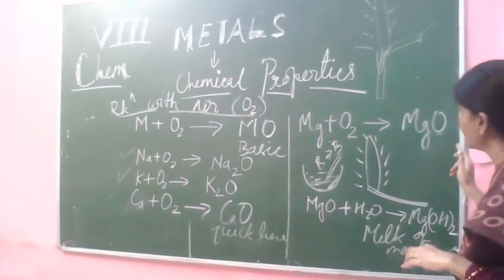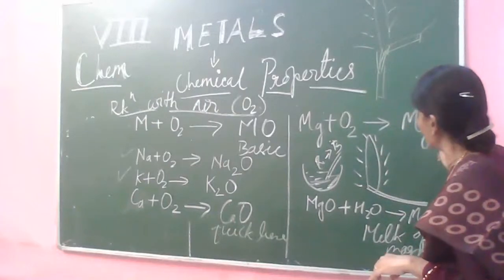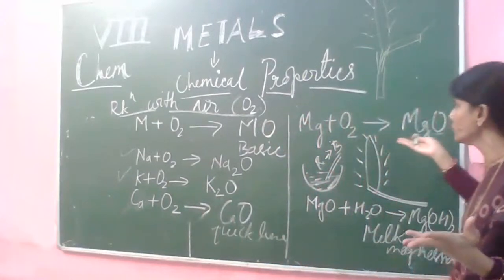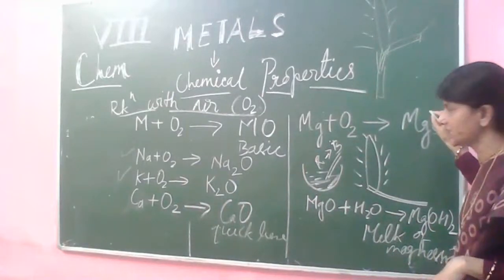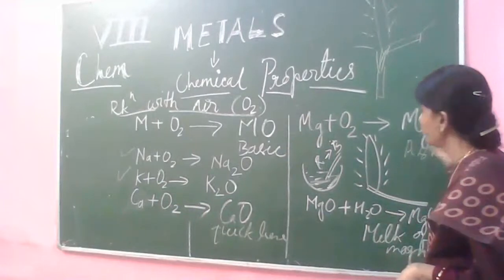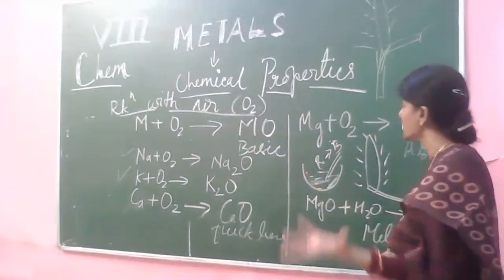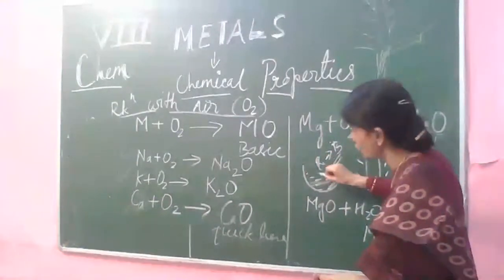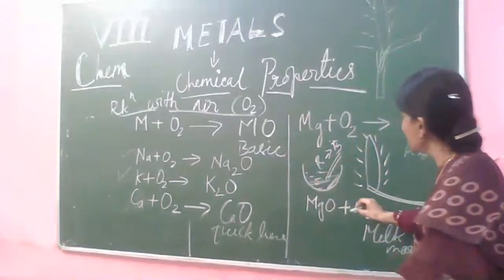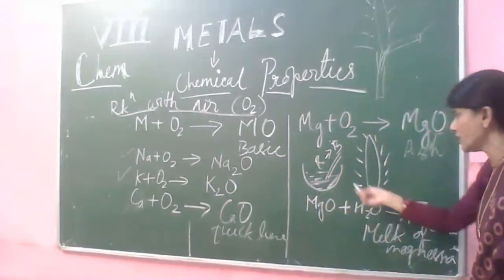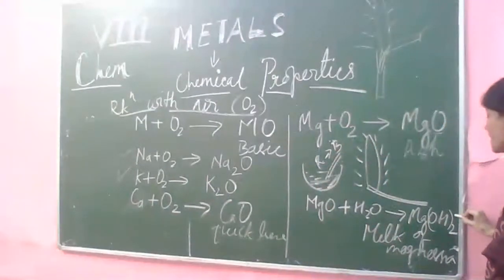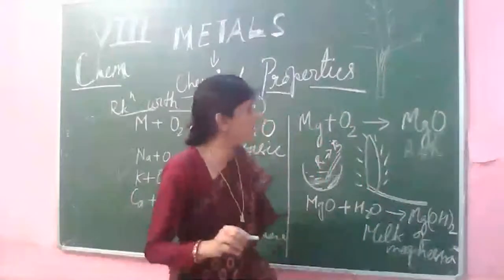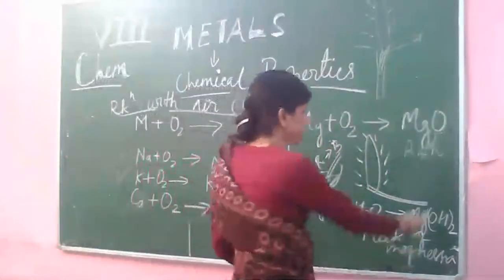Now we will try to prove that magnesium oxide is basic in nature. We take the ash of magnesium in a china dish — a bowl-like structure — and put some water in it and try to mix it. It will be half soluble in water; it will not completely dissolve. The chemical combination is: magnesium oxide plus water gives magnesium hydroxide. This magnesium hydroxide is a weak base.